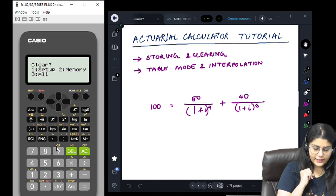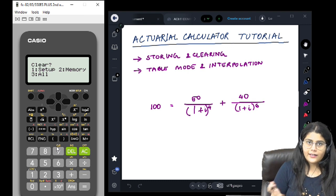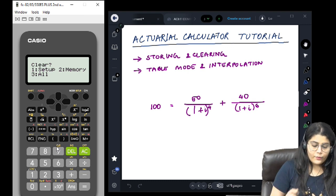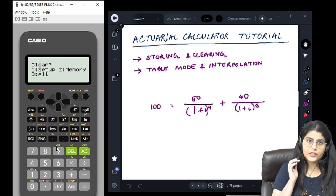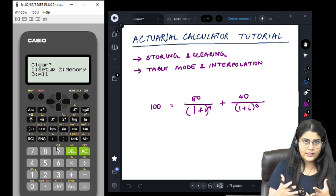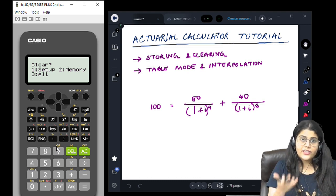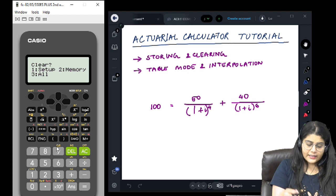We press shift and 9, and we're getting another question input: What all do we want to clear? We want to clear everything. 1 is setup, 2 is memory, and 3 is all. Setup we have already seen - to change it back to default, we click 1.